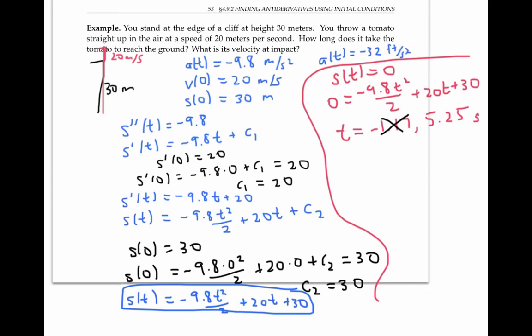Now to find the velocity of impact, I need to plug that time into my velocity equation, in other words, my equation for s prime. So s prime of 5.25 is negative 9.8 times 5.25 plus 20, which simplifies to negative 31.45 meters per second, probably enough to squash the tomato.